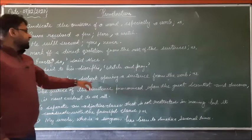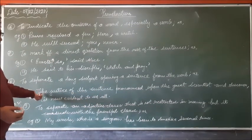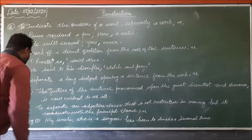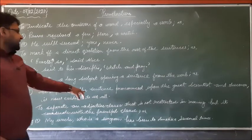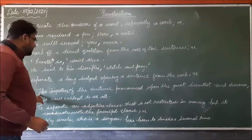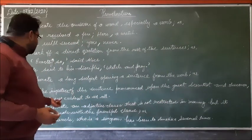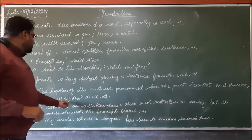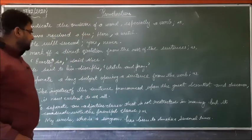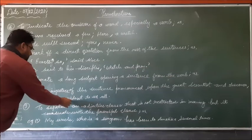Next use: to separate a long subject opening a sentence from the verb. For example: 'The injustice of the sentence pronounced upon the great scientist and discoverer' — this is the long subject part. It is separated by comma from the verb part: 'is now evident to us all.' So the long subject is separated from the verb part by comma.